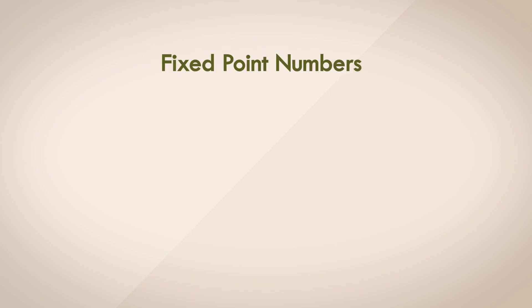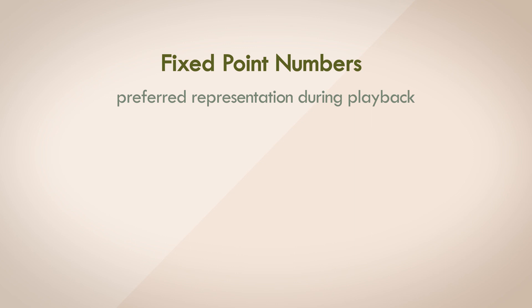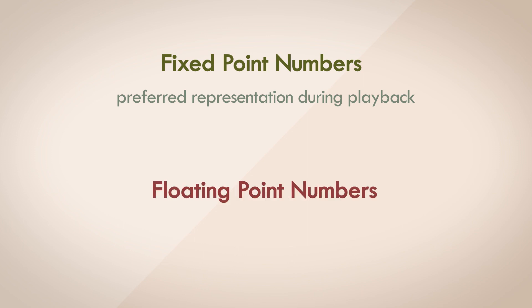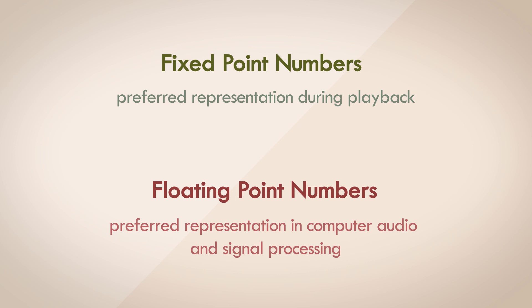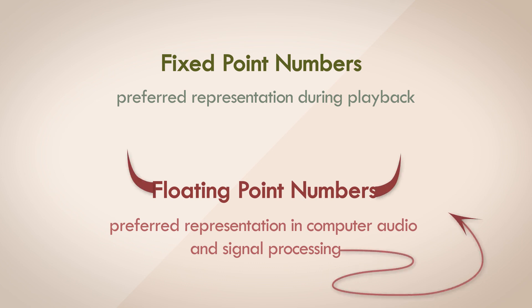Fixed point numbers have traditionally been used for storing digital audio, and for playback this is still the preferred format. DSP processors and some cheaper or low-power devices are fixed point processors, and during playback you generally don't perform complex signal processing, so fixed point format is perfectly fine and efficient. But today in computer audio, we rarely use fixed point format for signal processing and rely primarily on floating point numbers — either in single precision or double precision form. There are numerous reasons for this, but there are also several nuances and pitfalls which make floating point a hairy format to work with — and we'll take a deep dive into it starting from the next video.